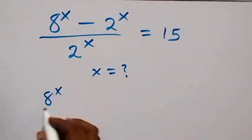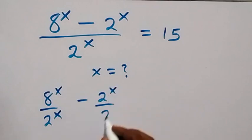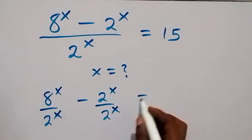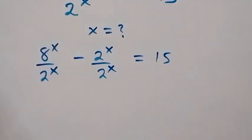8^x over 2^x minus 2^x over 2^x equals 15. And in the next step we have the power of x come out, so this is (8/2)^x.